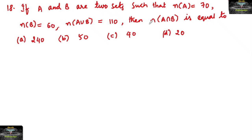If A and B are two sets such that N(A) = 70, N(B) = 60, N(A∪B) = 110, then N(A∩B) is equal to.